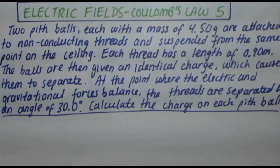Hey guys, let's do another Coulomb's Law problem. Two pith balls, each with a mass of 4.50 grams, are attached to non-conducting threads and suspended from the same point on the ceiling. Each thread has a length of 0.90 meters. The balls are then given an identical charge which causes them to separate. At the point where the electric and gravitational forces balance, the threads are separated by an angle of 30 degrees. Calculate the charge on each pith ball.